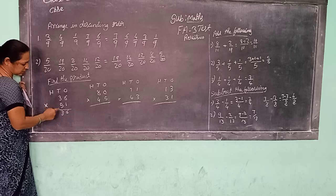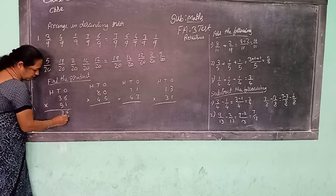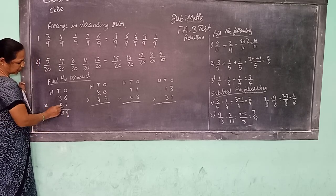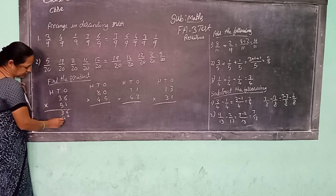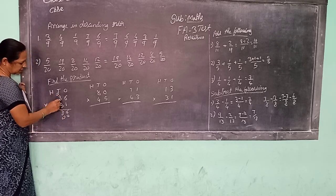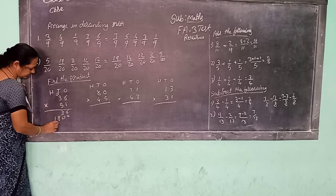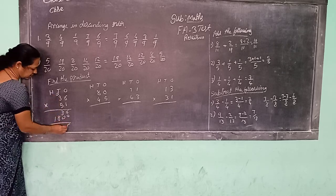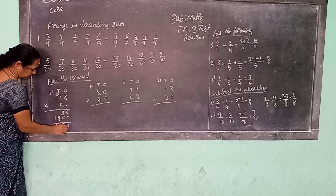We have to start with the ones place. So in the ones place we can put 0 or plus. Now start at the ones place: 5, 6 are 30. Right 0, 3 carry. 5, 3's are 15 plus 3, 18. Right 6, 3, 8, 1.